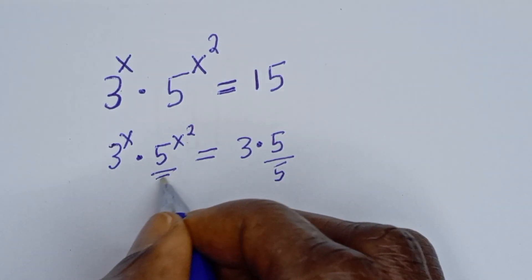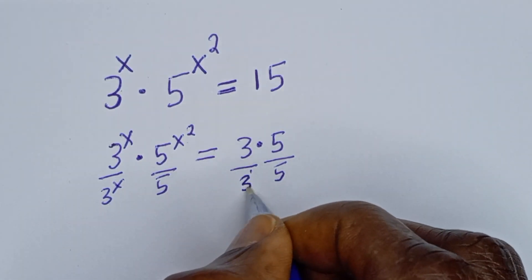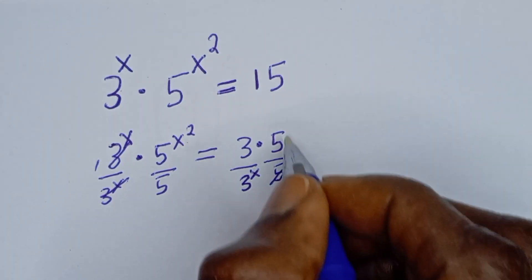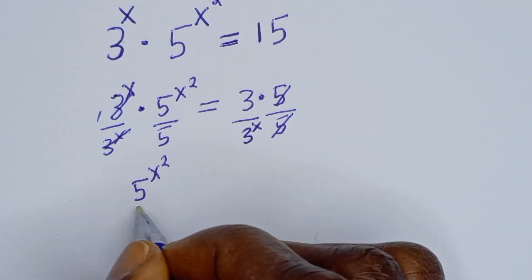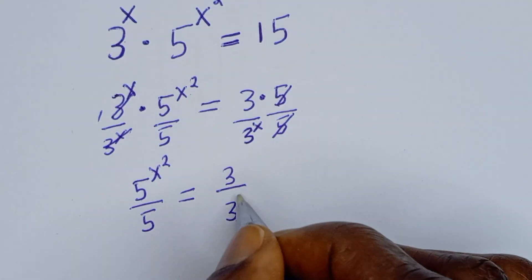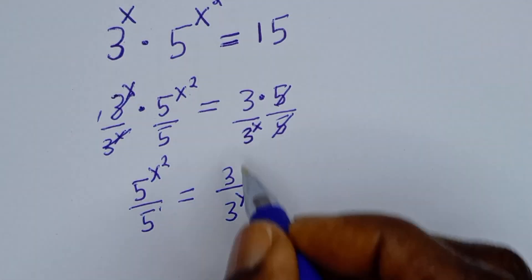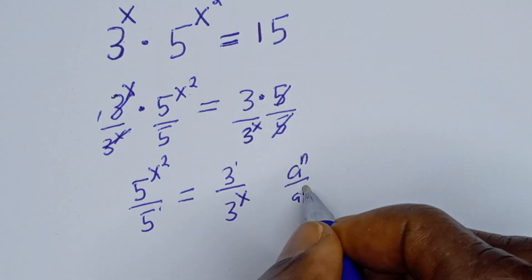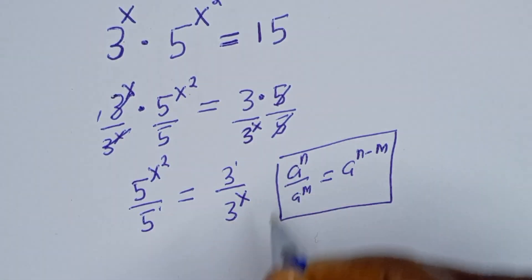Let's divide this side by 3 to the power of s as well. Then the 3s cancel and the 5s cancel, giving us 5 to the power of s squared divided by 5 is equal to 3 divided by 3 to the power of s. This is the same as 5 to the power of 1 and 3 to the power of 1. Using the rule a^n divided by a^m equals a^(n minus m).